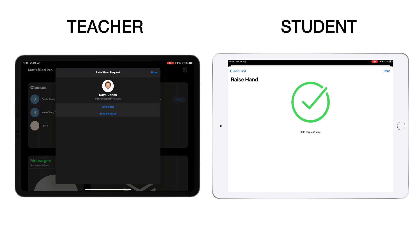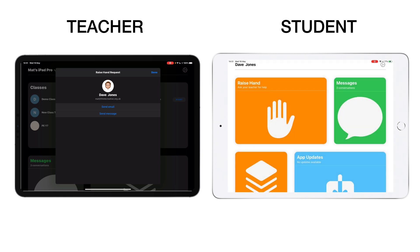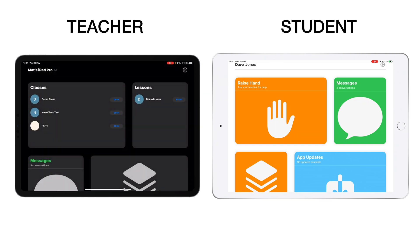You're probably thinking you don't want children messaging you at eight o'clock at night. Rest assured, you can set time scales for when students are able to do that — if you only want to be available up to a certain point in the evening, you can set it so the raise hand function simply disappears and won't appear as an option on their screen.